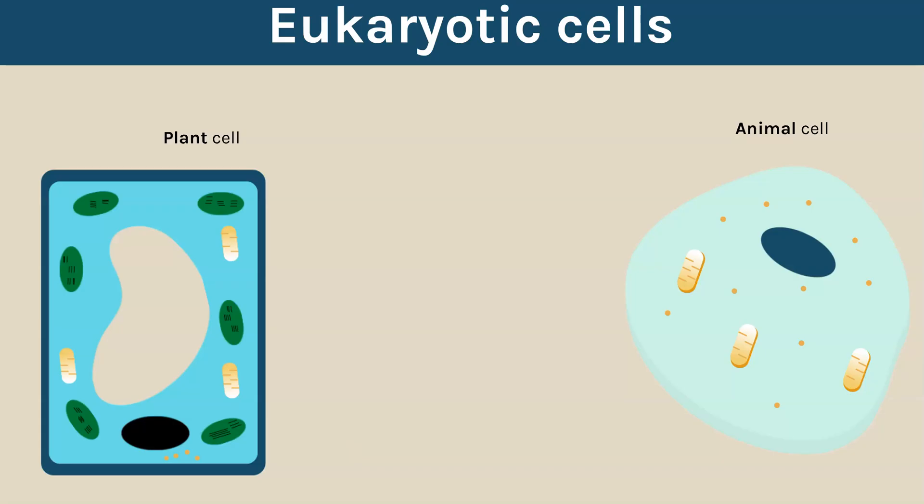So first of all we've got here our two examples of eukaryotic cells for GCSE. We have a plant cell and an animal cell and if you haven't already seen my video on eukaryotic cells compared to prokaryotic cells I'll link up here so you can go and take a look.